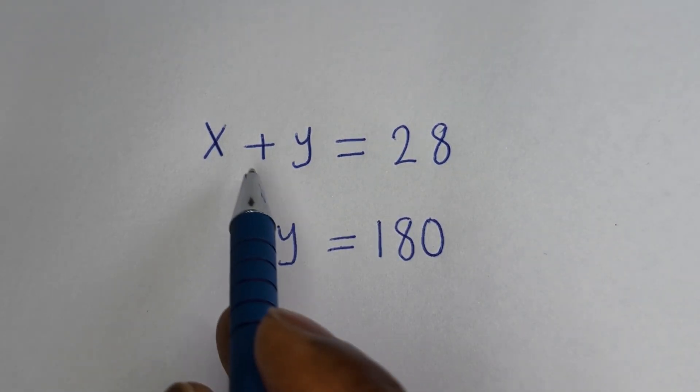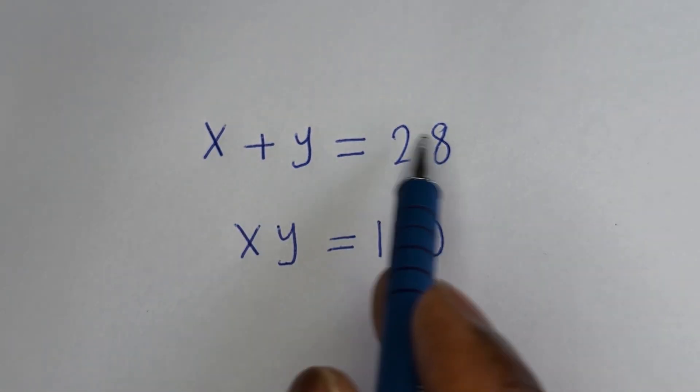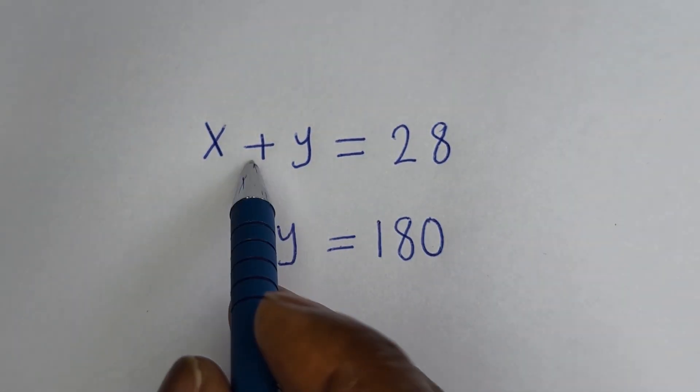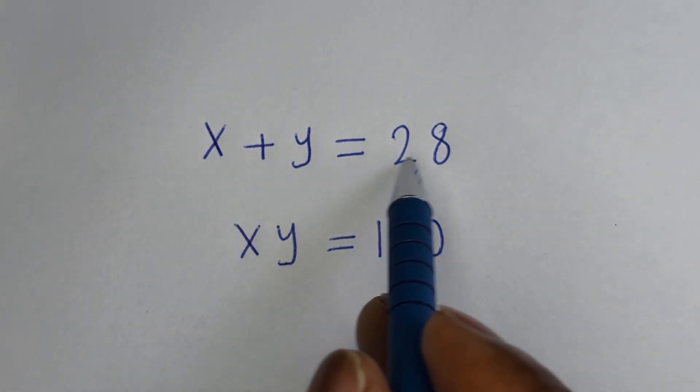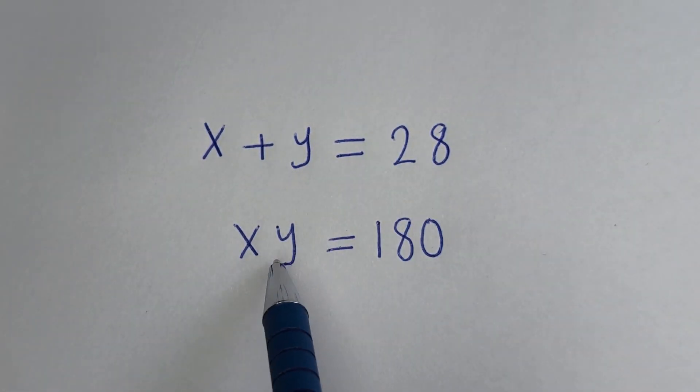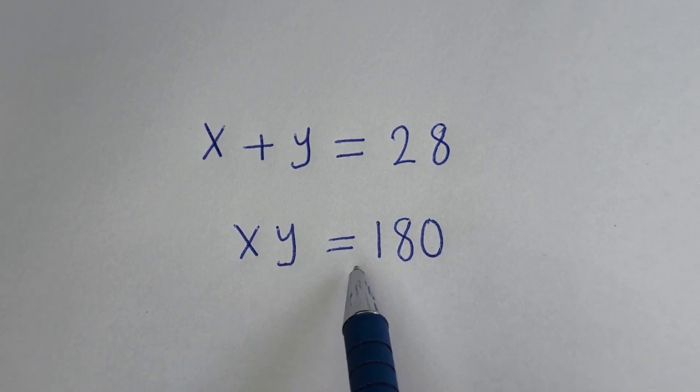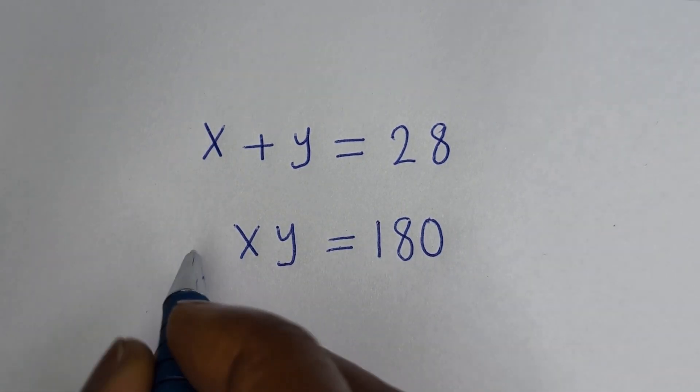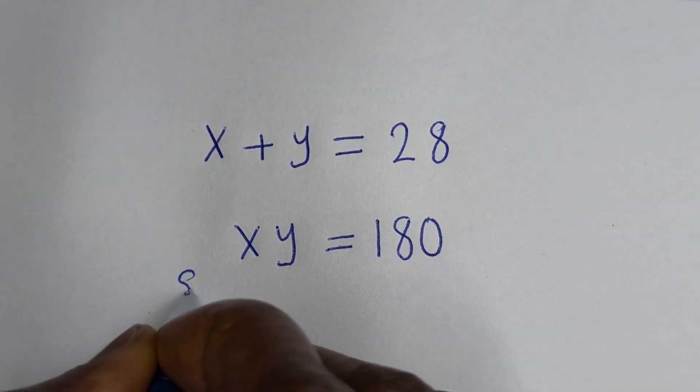Hello, how to solve for S and Y in this equation. S plus Y is equal to 28, S times Y is equal to 180. Solution.